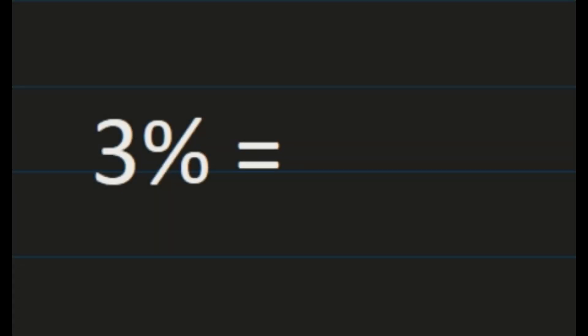The steps to turn a percent into a fraction are very simple. Percents are out of 100. 100% is your whole, and your percent is the part of a whole. So when you turn a percent into a fraction, you simply take your percent and put it over a denominator of 100.